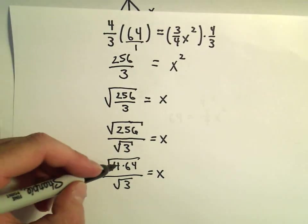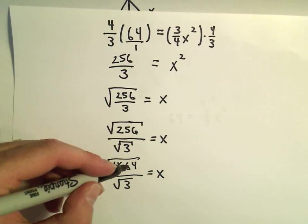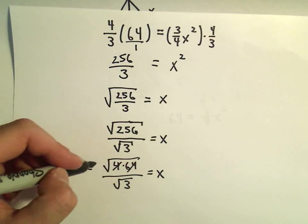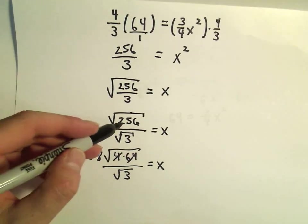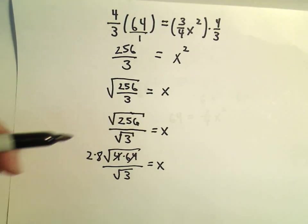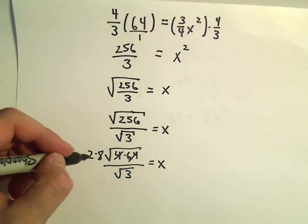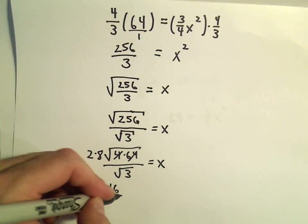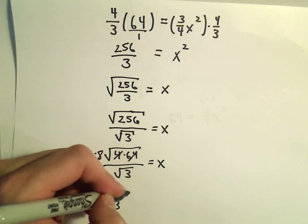Well, we can take the square root of 4. That would simply come out as a 2. The square root of 64 would come out simply as an 8. So it turns out maybe you recognize the square root of 256 immediately. It's going to be 2 times 8, or 16, over the square root of 3.